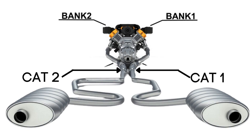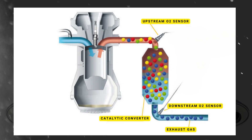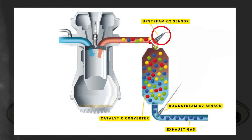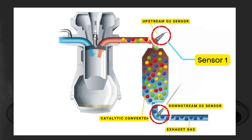Each bank has its own exhaust line, and each exhaust line is equipped with two catalytic converters. Here's where the oxygen sensors come in. Each catalytic converter has two oxygen sensors — an upstream sensor, which we call sensor 1, and a downstream sensor, known as sensor 2.